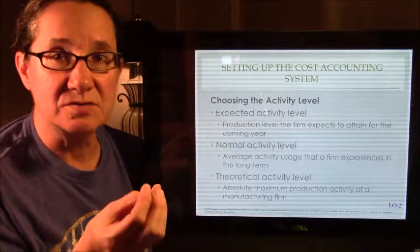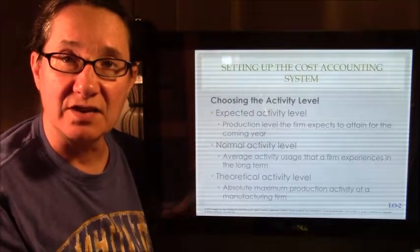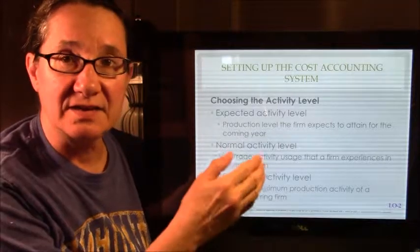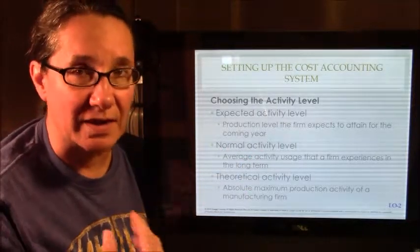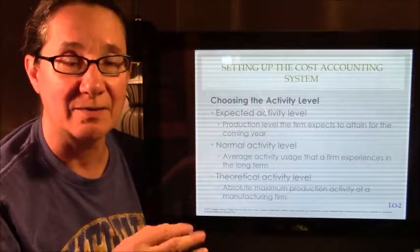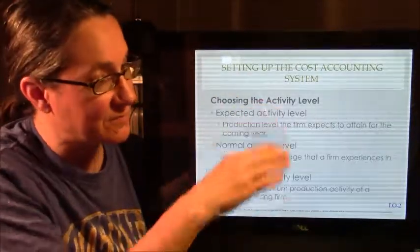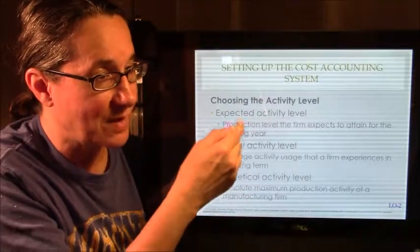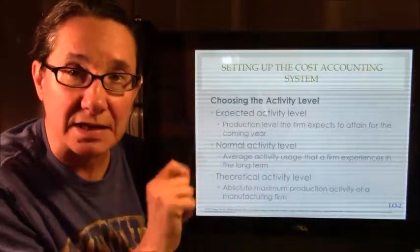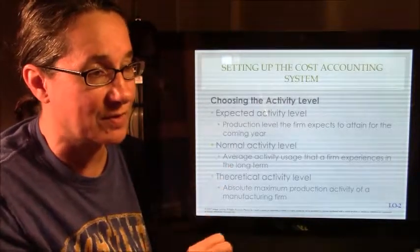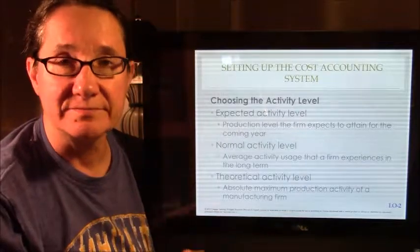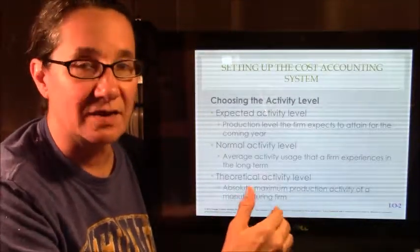One thing you have to choose, in addition to estimating your overhead, you have to estimate the activity level for that driver. Are we going to make a lot of this product or very few of this product or use a lot of machine hours, use a lot of labor? So we have different amounts. We have expected levels, we have the normal level, which is what we predict, which is average over a long period of time, we normally use these many machine hours.